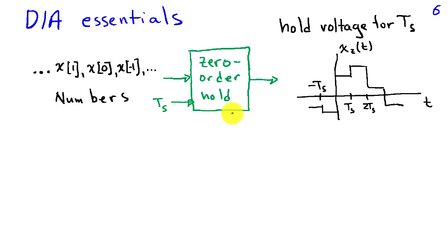Now, what the zero-order hold does is it takes these numbers, and it puts out a voltage proportional to x at time zero, and it holds that voltage until time t sub s. At time t sub s, it puts out a voltage proportional to x of one on the input side, and it holds that voltage again for a length of time t sub s. And this produces a stair-step type signal that has these constant values which correspond to the numbers representing the signal in the computer.